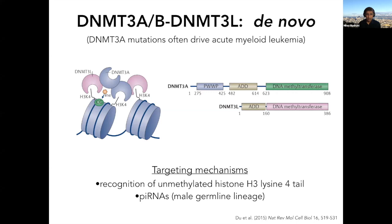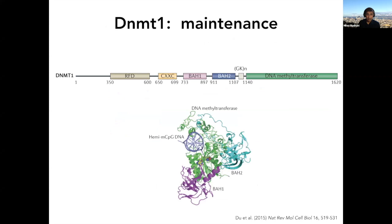There are a couple of known targeting mechanisms. DNMT3A and DNMT3B have ADD domains that recognize the unmethylated form of the histone H3 tail, playing a key role in triggering DNA methylation on regions of chromatin that lack H3K9 methylation — a mark associated with active transcription. In the mouse male germline, there's good genetic evidence that piRNAs act to promote DNA methylation, though detailed mechanisms are unclear.